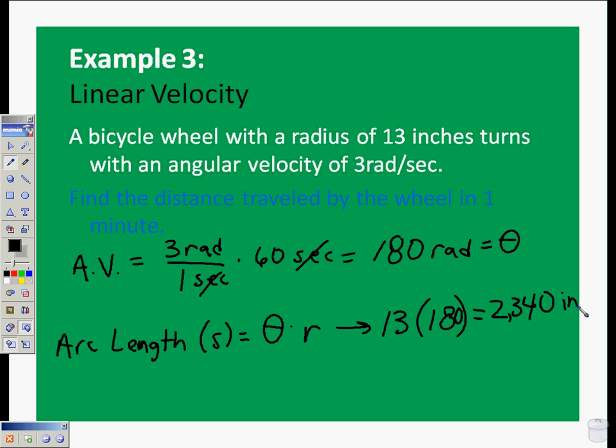Since we don't really want to measure in inches, that's kind of an impractical measurement, we can convert that to feet. If there are 2,340 inches, and we multiply that by 1 foot over 12 inches so that our units cancel, that's going to give us 195 feet.